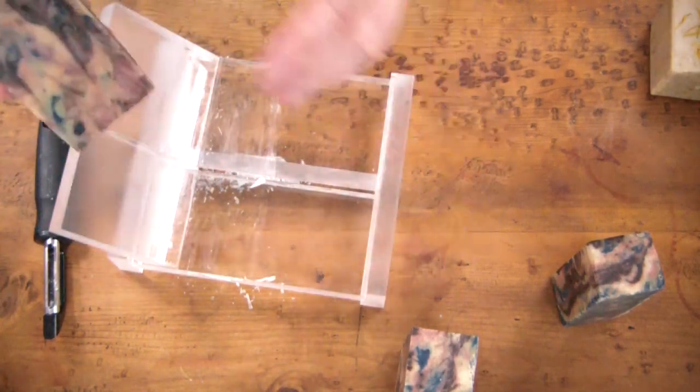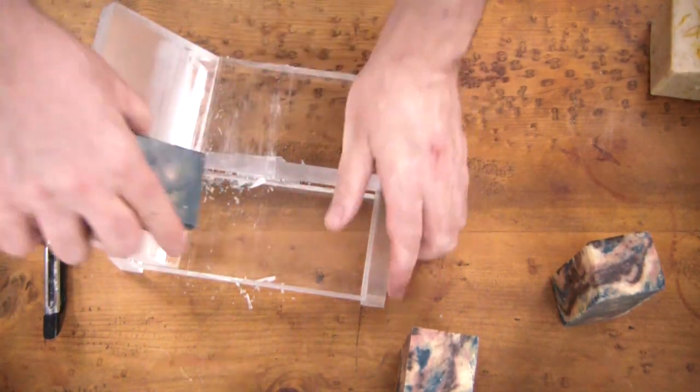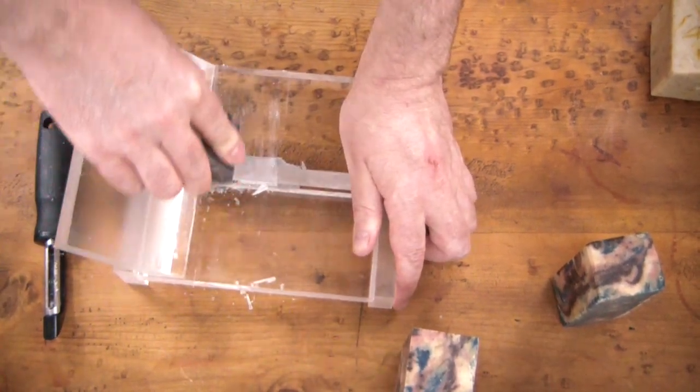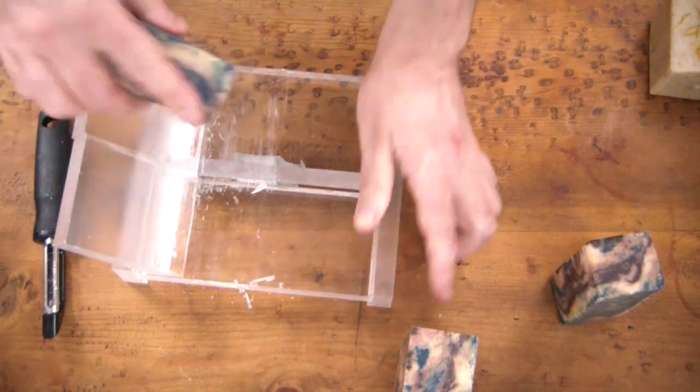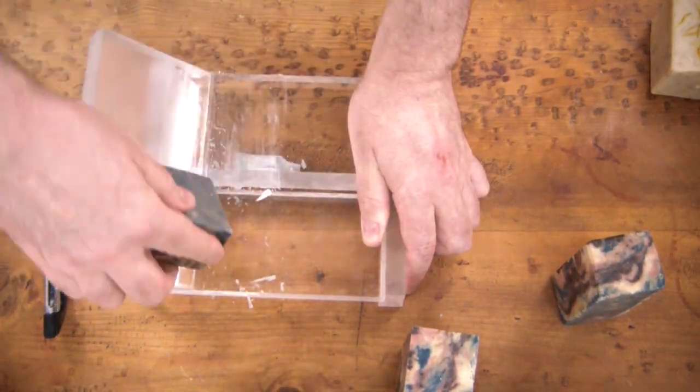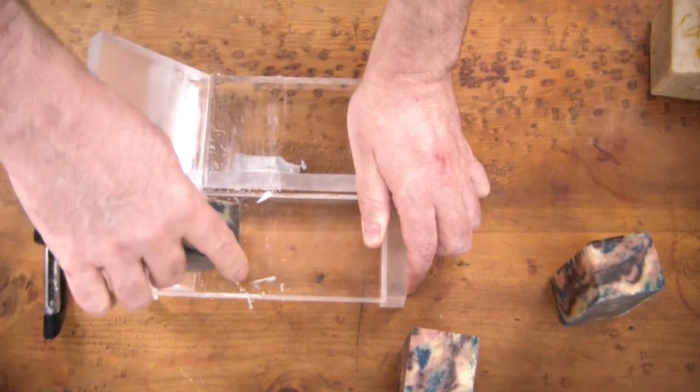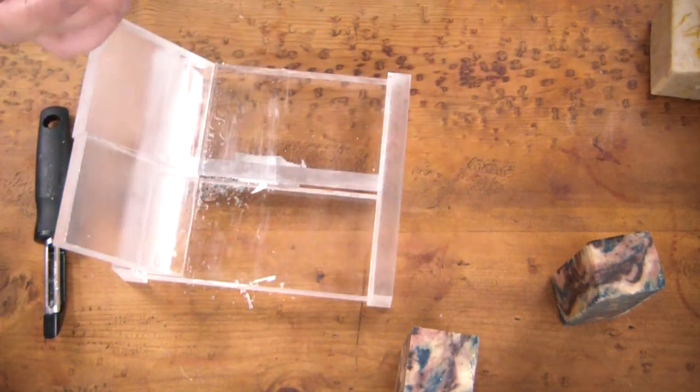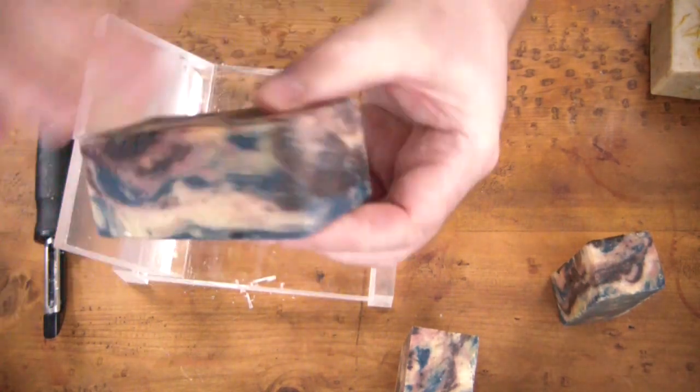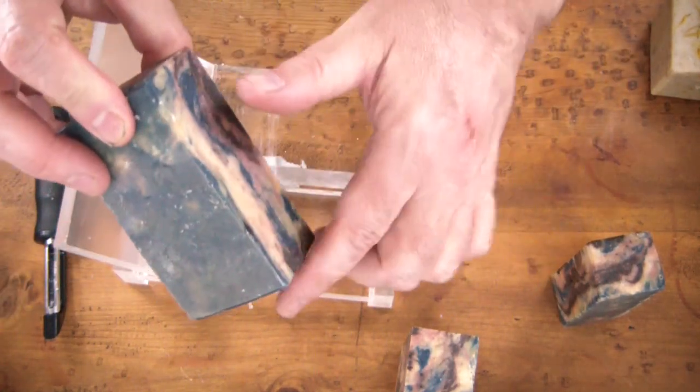Since I have it, I go ahead and use it for doing my bevels. I do every edge, at least if there's not a top on the soap. Obviously if there are flowers or a pipe top or something you couldn't really do the top, but all the other edges you certainly can.